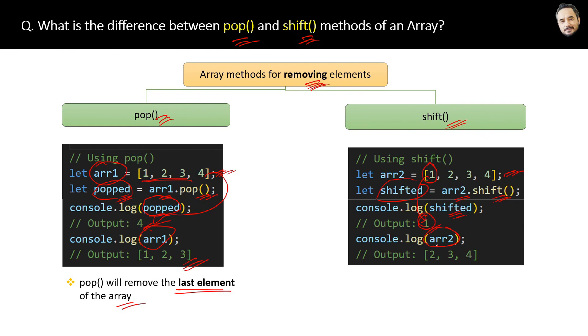If we print the whole array, we will get elements 2, 3, and 4. The reason is shift method will remove the first element of the array. So shift is removing the first, pop is removing the last element of the array, and that is the difference between them.